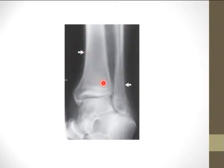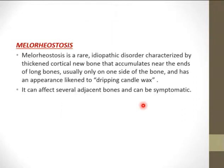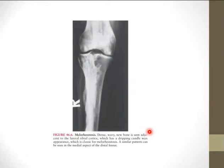Melorheostosis is a rare idiopathic disorder characterized by thickening of cortical new bone that accumulates near the ends of long bones, usually on one side of the bone, with an appearance called 'dribbling candle wax.' It can affect several adjacent bones and can be symptomatic. One of the common sites is the metacarpals and metatarsals — you might see focal cortical sclerosis in one of the metatarsals, most often diagnosed incidentally.